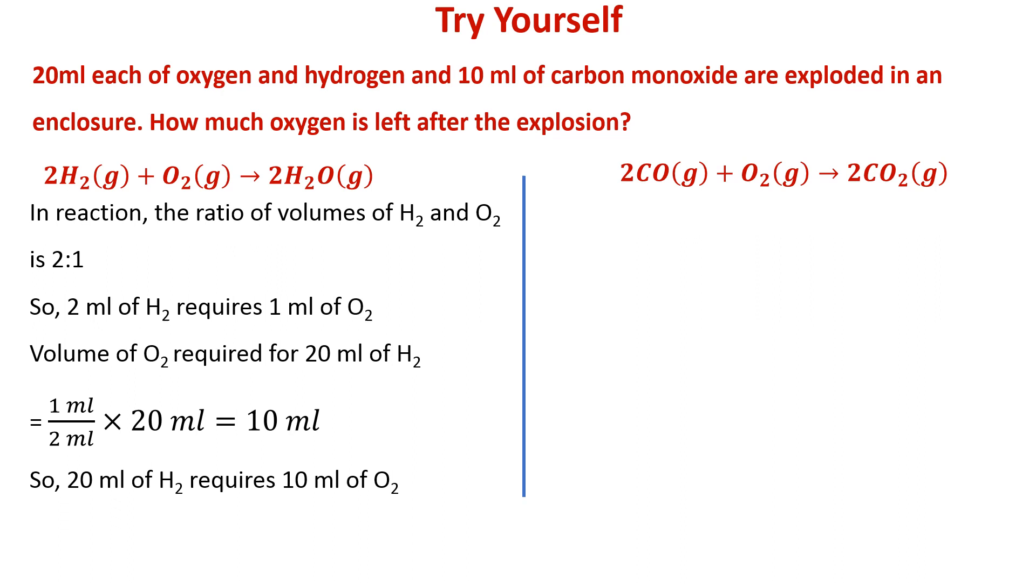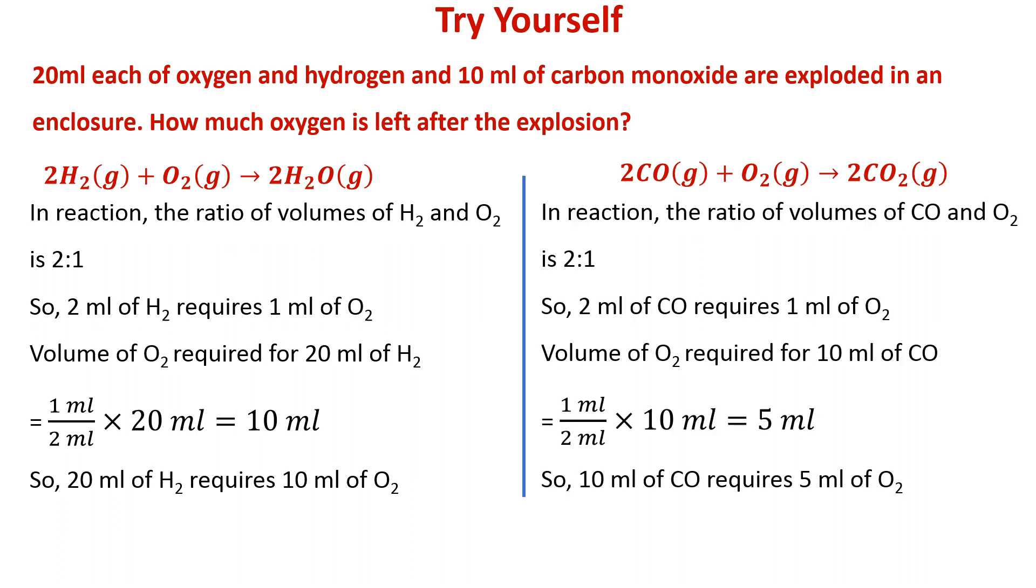Same thing we can do with the second reaction. In this reaction, the ratio of volumes of CO and O2 is 2 is to 1. So 2 ml of CO requires 1 ml of O2. In the question, 10 ml of CO is given. So the volume of O2 required for 10 ml of CO will be equal to 1 ml upon 2 ml into 10 ml, which gives answer as 5 ml. So 10 ml of CO requires 5 ml of O2.